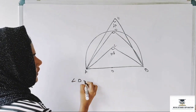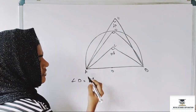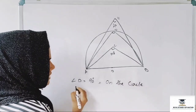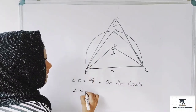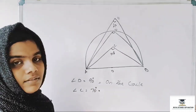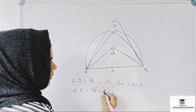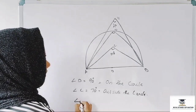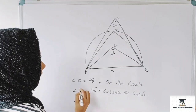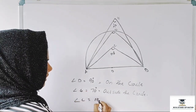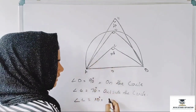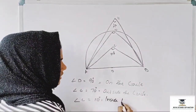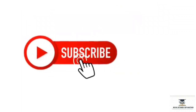Angle D is equal to 90 degrees — that is on the circle. Angle C is equal to 70 degrees — less than 90 degrees, so outside the circle. Angle C is equal to 110 degrees — greater than 90 degrees, so inside the circle.